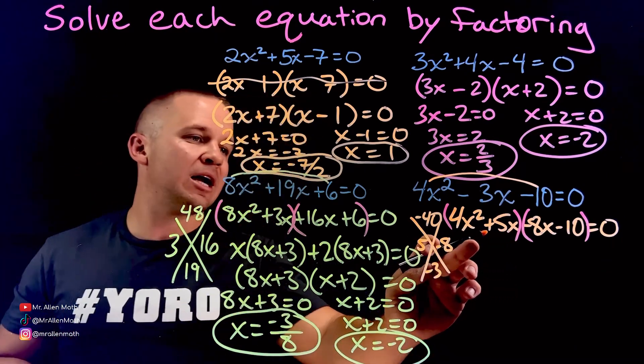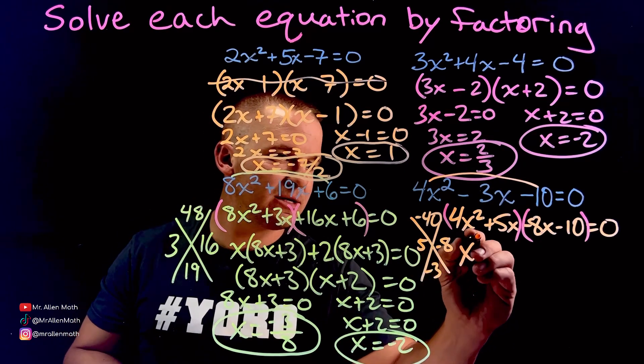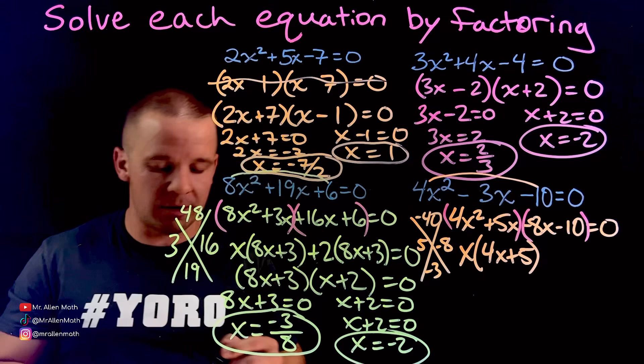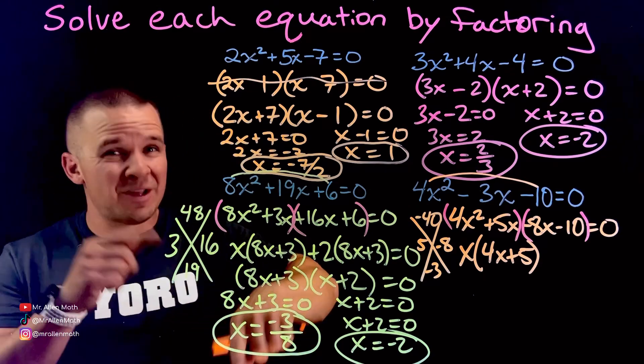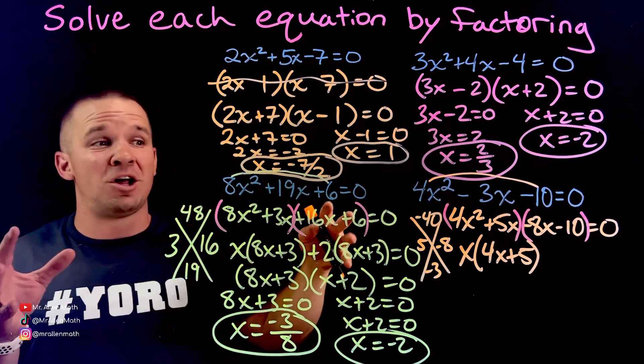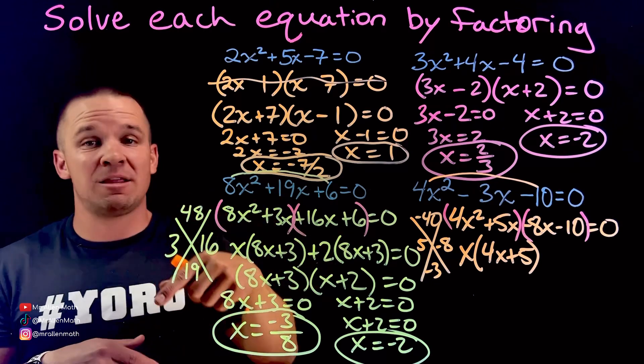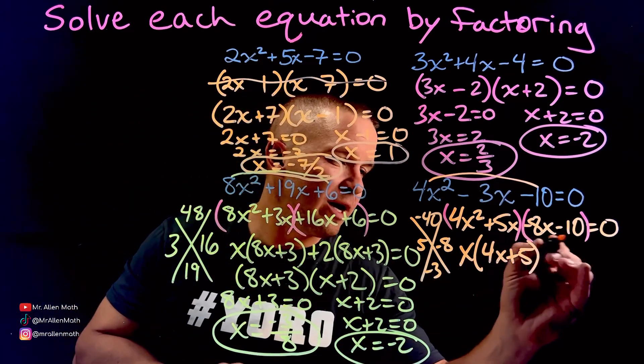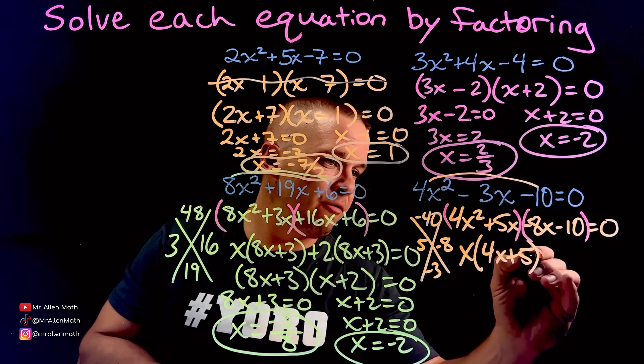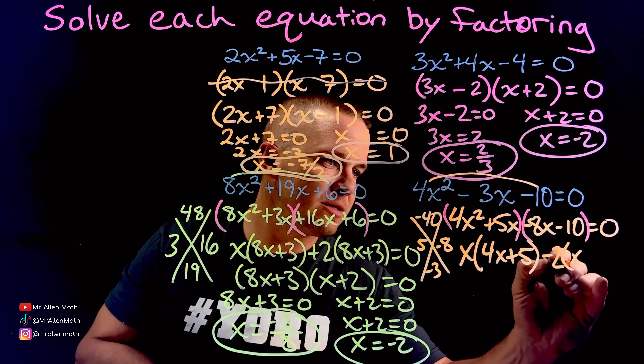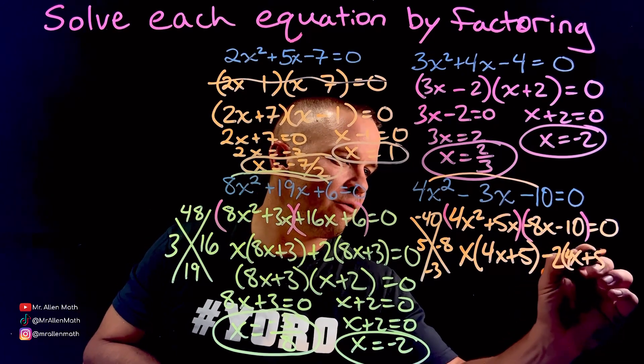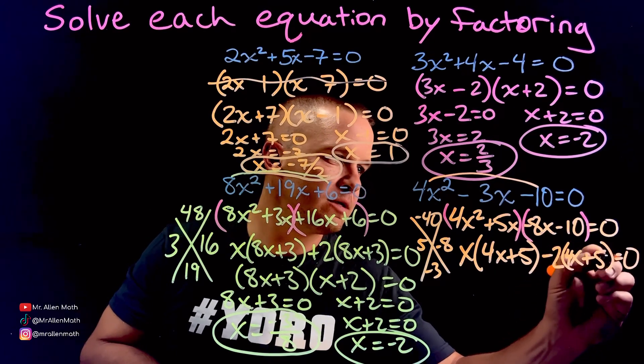All right. GCF time. I can pull out an x from each one of these. So I got x and then I'd have 4x plus 5 left over. If you don't know how to do GCF, I got GCF video as well. If you're watching the long form, skip back, baby. Skip back to the beginning. It's GCF. Now, what can I take out of both of these? I can take out a negative and a 2 and I'm left with 4x. Don't forget that 4. 4x plus 5. That all equals zero.